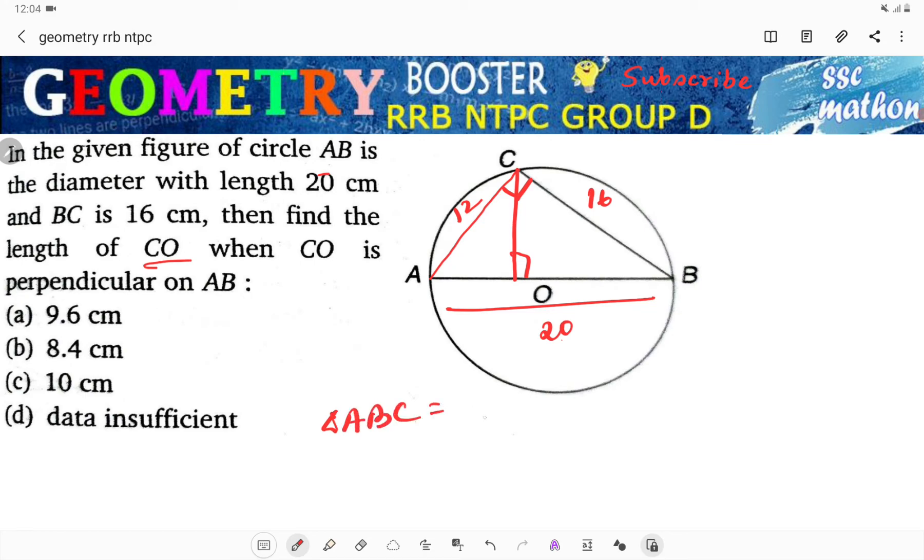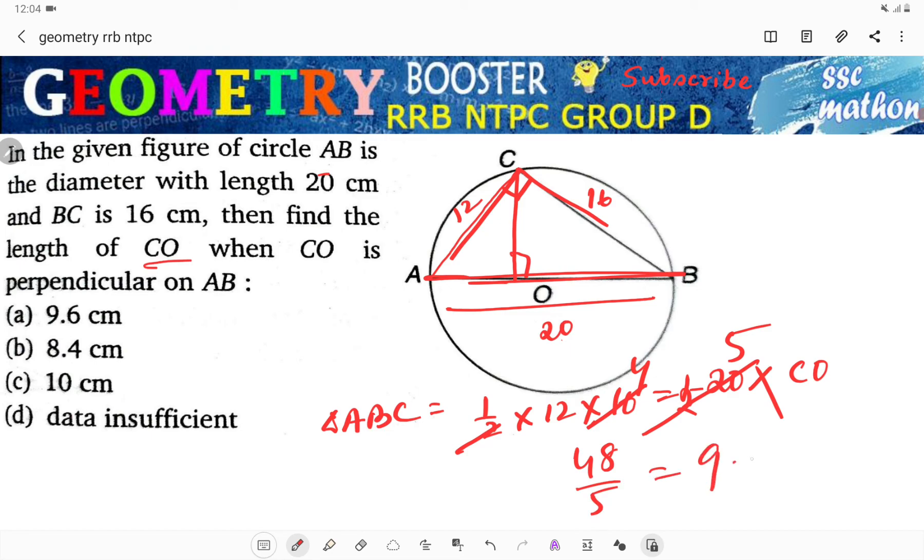Working on it, half into 12 into 16 equals the area. Also area equals half into AB which is 20 into CO. So CO equals 12 times 16 divided by 20, which equals 9.6. 9.6 is the correct answer.